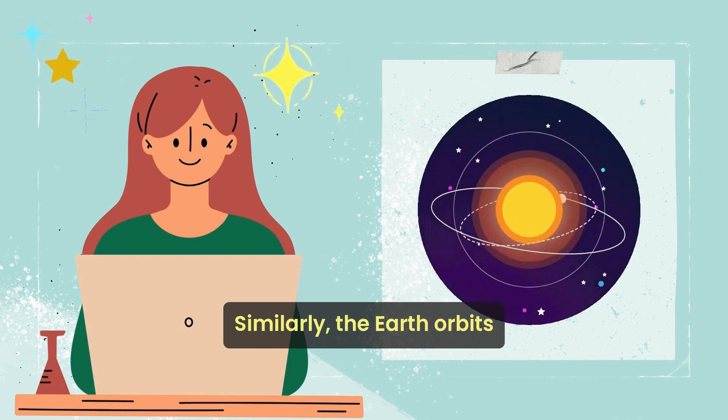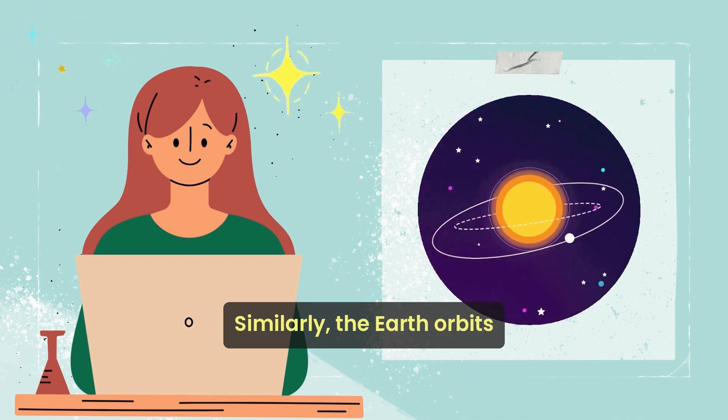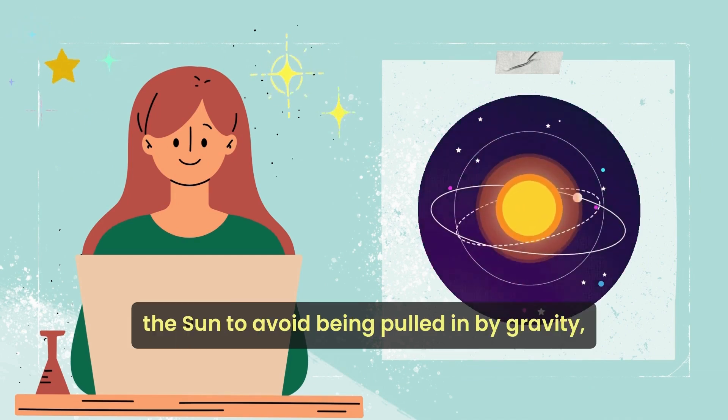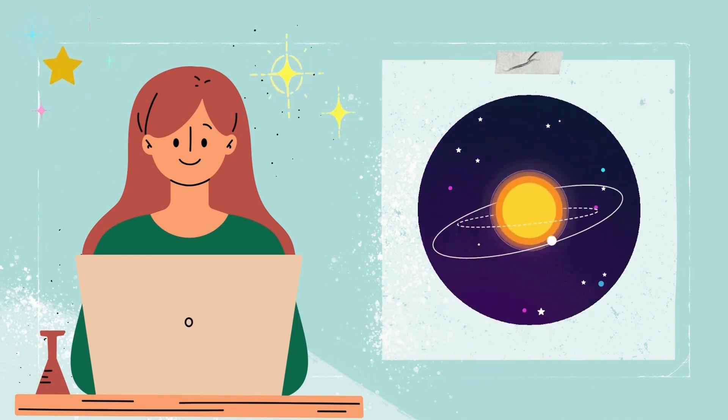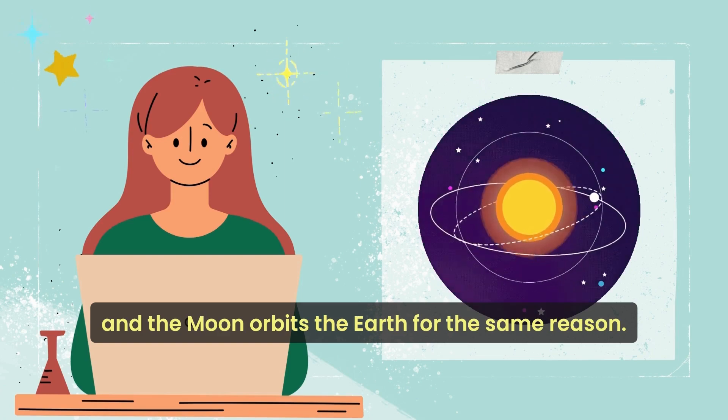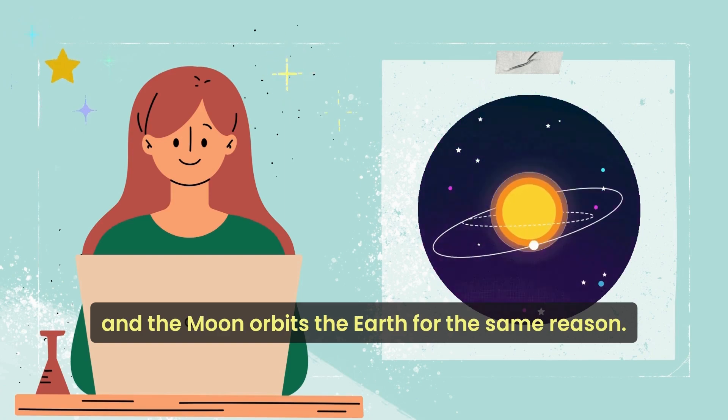Similarly, the Earth orbits the Sun to avoid being pulled in by gravity, and the Moon orbits the Earth for the same reason.